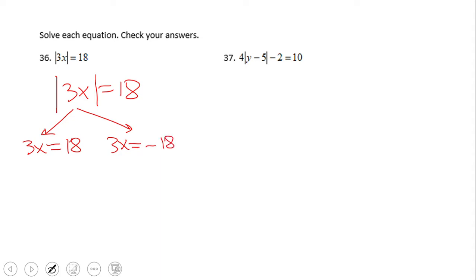Obviously the first one we divide by three, we get x equals six. Second one also divide by three, we get x equals negative six. So as you notice we have two solutions for this absolute value equation.